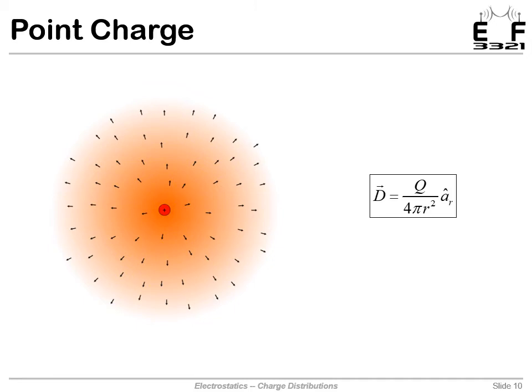So we start with a point charge. Now, point charges don't exist, but why are they important? Well, if we have a charged object, if we're far enough away from that, it looks and acts as if it was a point charge. We can't tell the difference when we're far enough away. So that equation is very useful.